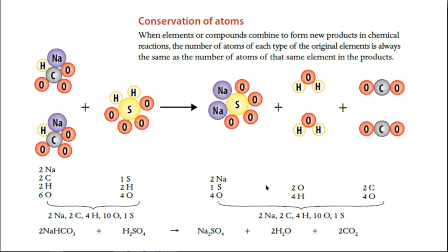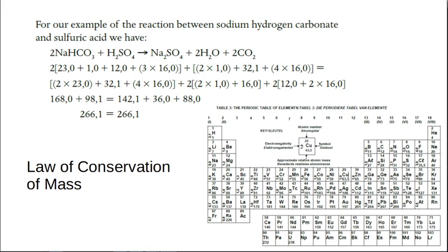You can go to the periodic table and work out the masses. For the bicarb: 23 for sodium, one for hydrogen, 12 for carbon, and three times 16 for the oxygen. This is one bicarb molecule, but in my balanced equation I've got two of them. So I work out what's in the brackets and multiply by two. Then we look at the sulfuric acid: two for the hydrogens, 32 for the sulfur, and four times 16 for the SO4 group.